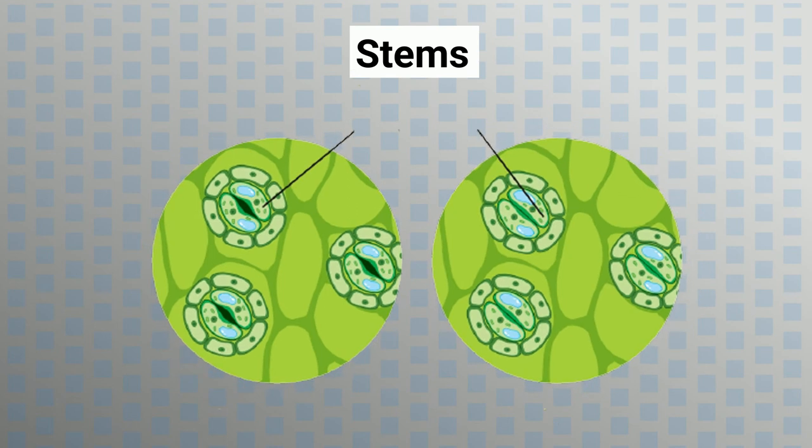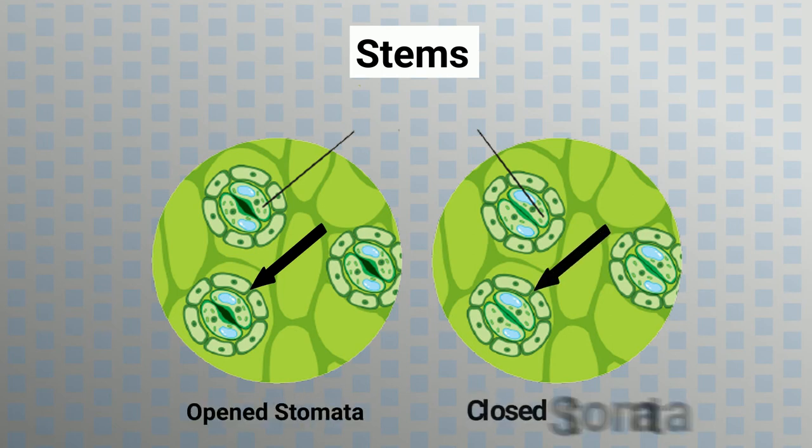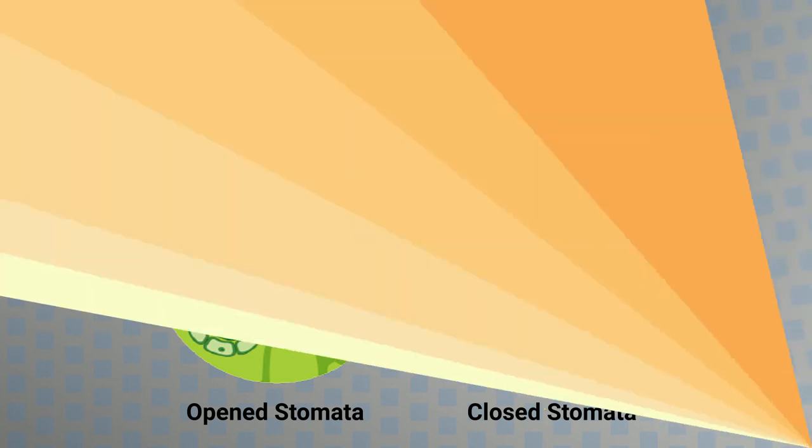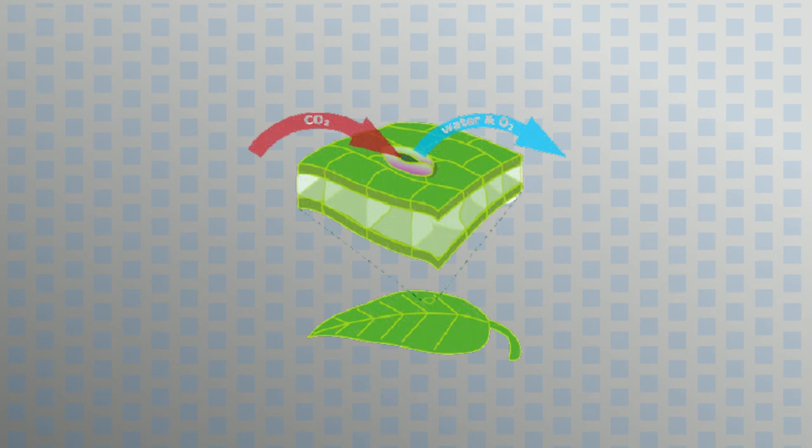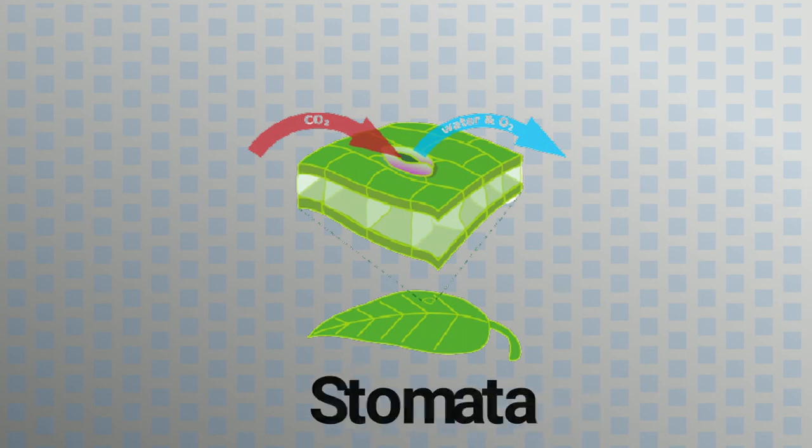Stems: Stems have tiny pores known as stomata. Air diffuses through them which then circulates in different parts. At this stage, carbon dioxide that is released in the process is also spread through stomata.